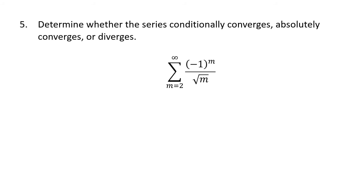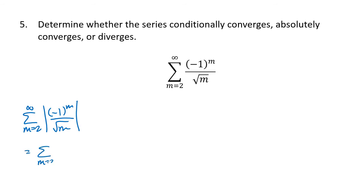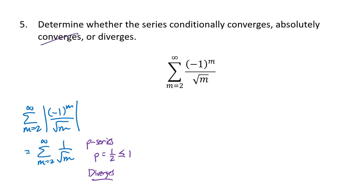For the next problem, we start by taking the absolute value, getting the sum from m equals two to infinity of 1 over the square root of m. This is a p-series with p equal to one half — since the square root of m equals m to the one half. Because one half is less than or equal to one, this p-series diverges. So the original series is not absolutely convergent, but it could still diverge or be conditionally convergent.